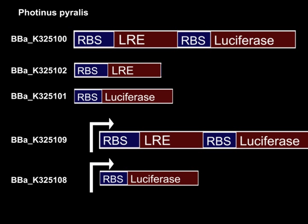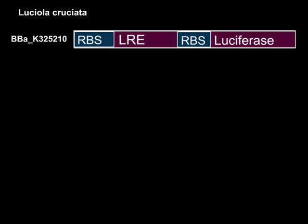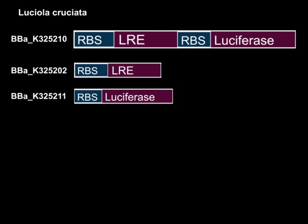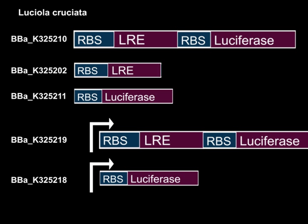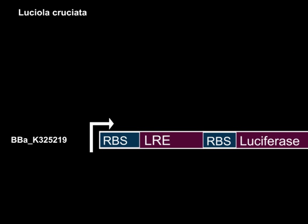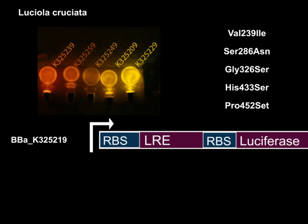We wanted to create a range of coloured outputs, and for this we turned to a different species of firefly, the Japanese firefly, Luciola cruciata. The Japanese firefly is remarkable, and the individuals of the species flash in synchrony, lighting up trees to such an extent that fishermen used their lights to guide them home. We again codon optimised both the LRE and luciferase genes, separated them, and placed the emitting bricks under PBAD for characterisation. We used the Gibson method to achieve site-directed mutagenesis of the luciferase gene within the operon. A number of single amino acid changes have been described which significantly altered the colour of emission, and we achieved five new colours of emission by site-directed mutagenesis.